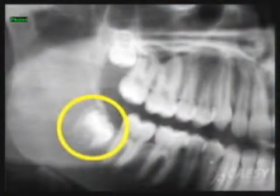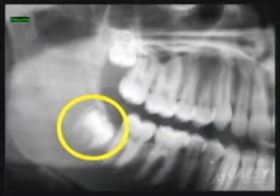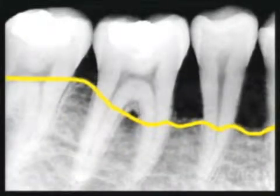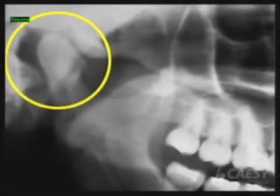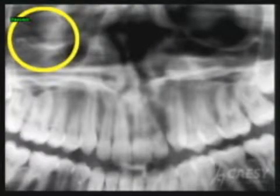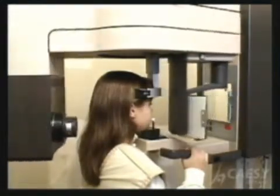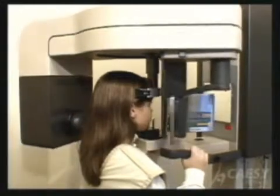Panoramic x-rays show some things that we don't see elsewhere, like your wisdom teeth. Sometimes it shows us the bone level if you have gum disease. Sometimes it shows us abscesses, defects in the jaw, and also we can have a good view of the sinuses. These don't show up on regular x-rays.